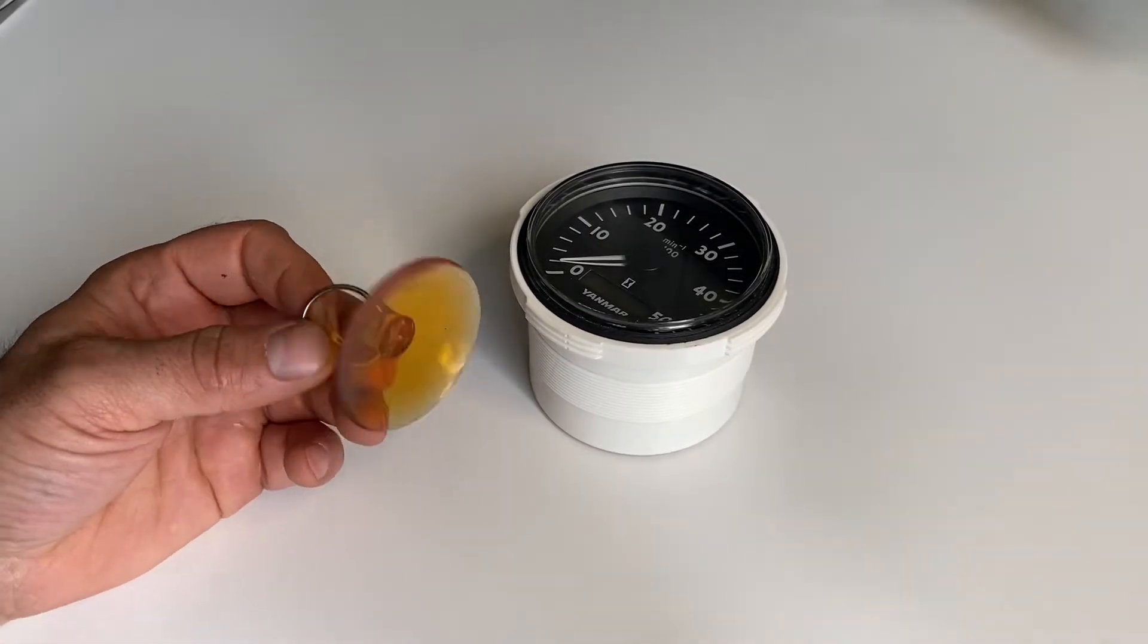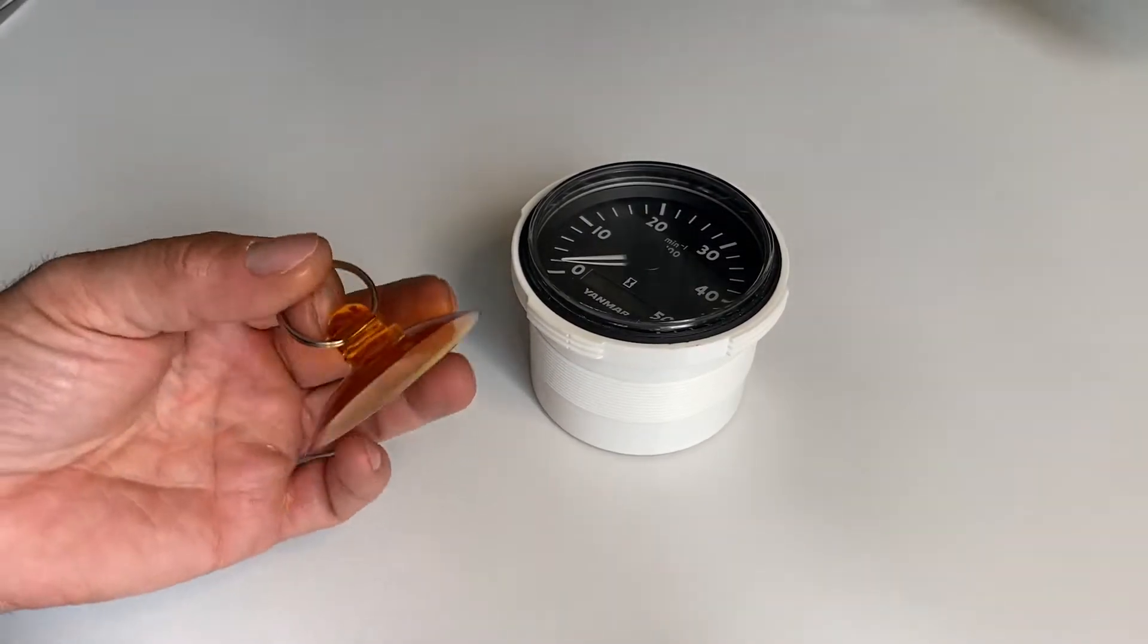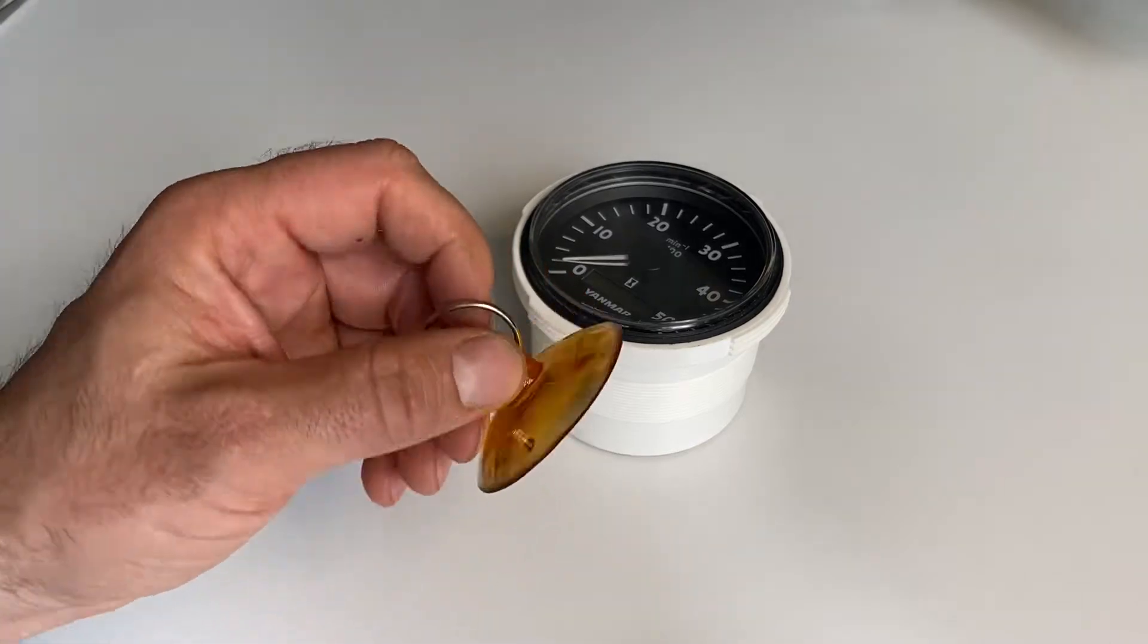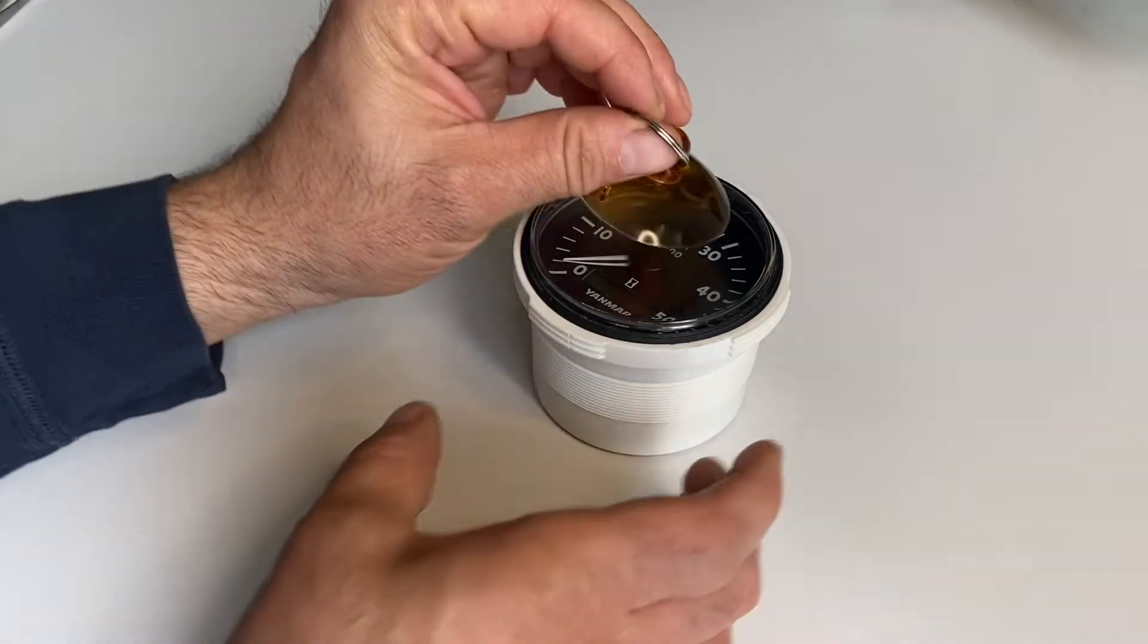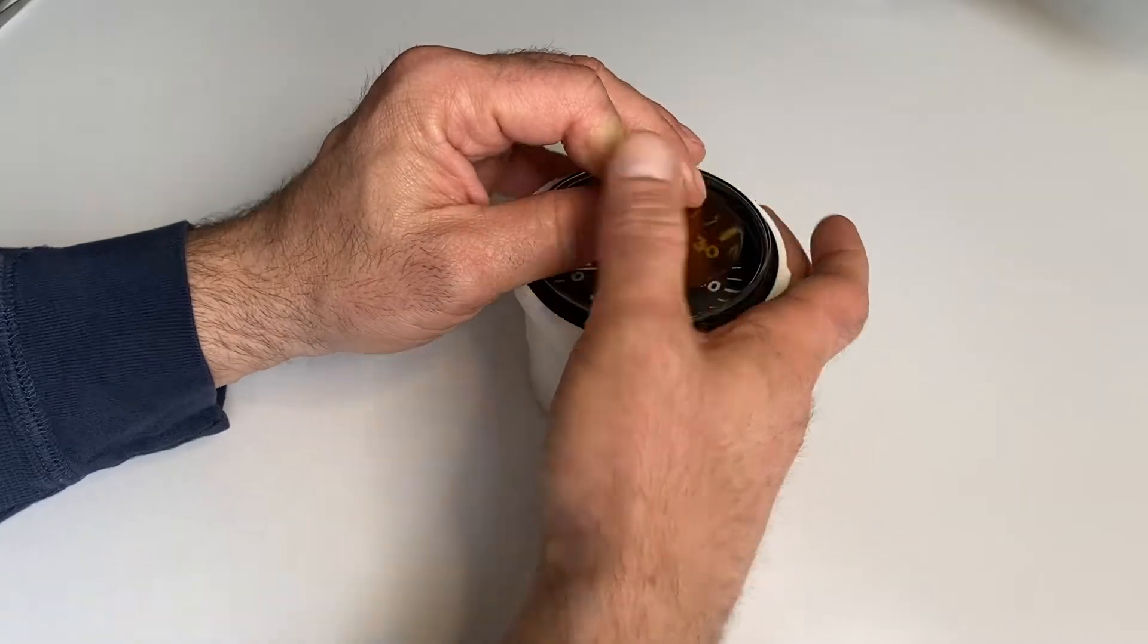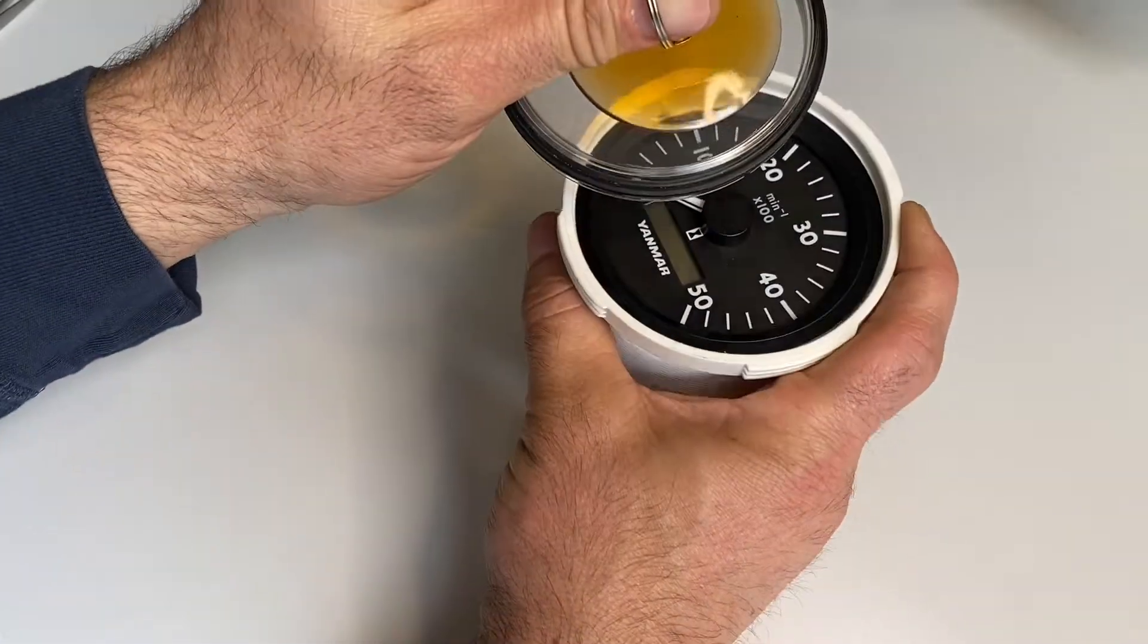Quick tip if you happen to have a small suction cup, maybe it's for the shower or car window or whatever it may be. Place that on there, push down, that will pop off real easy.